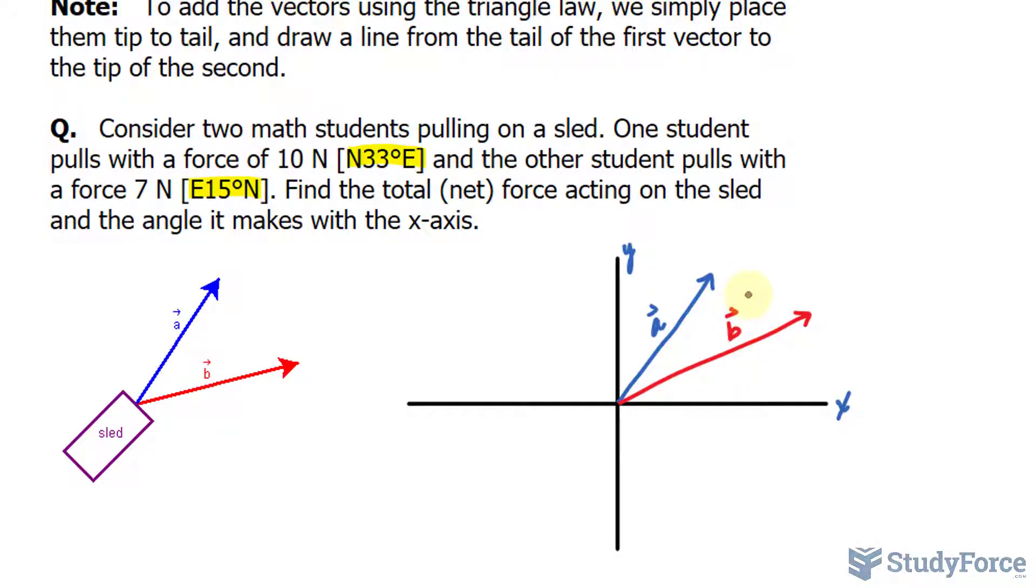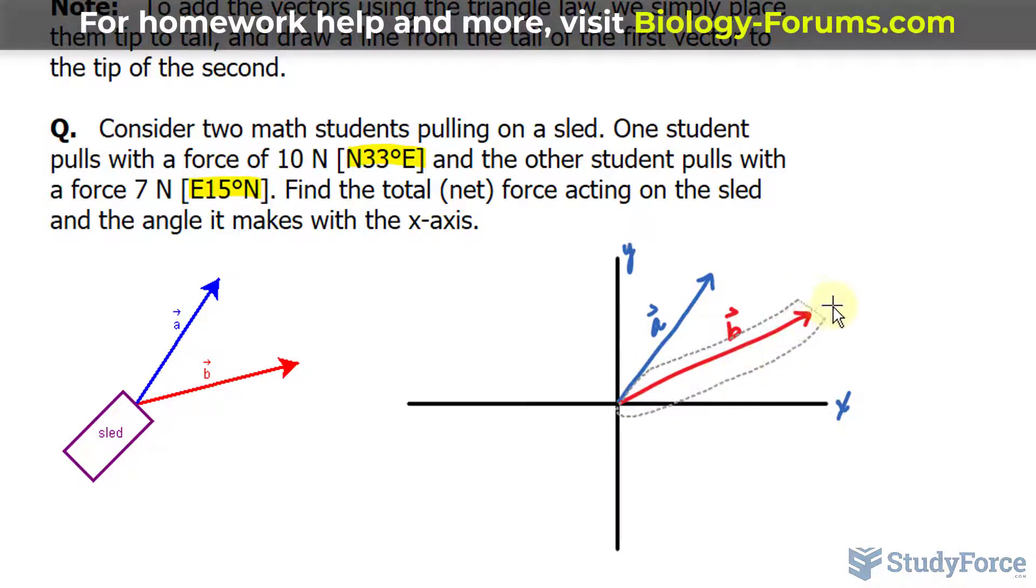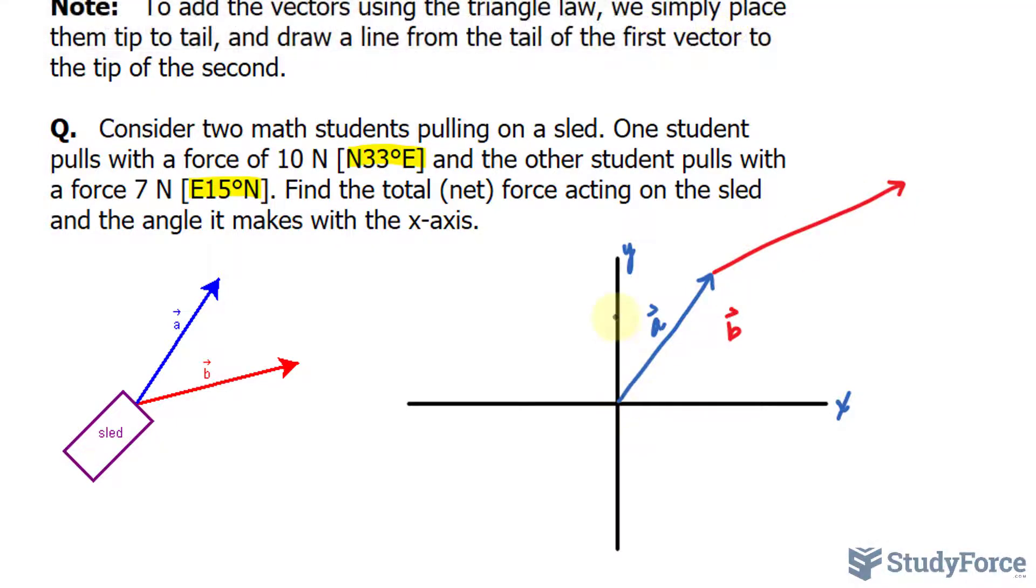Using the tail to tip method, this involves taking one vector, let's say this red vector, and placing it where the tip of the other vector lies. So the tail of the red one is at the tip of the blue one. And where the blue one starts and the red one ends is where the resultant vector will be. So this one, that's in black. And that's what we're looking for. We'll call that vector c. We are looking for the magnitude of c and the angle at which it makes with the x-axis.